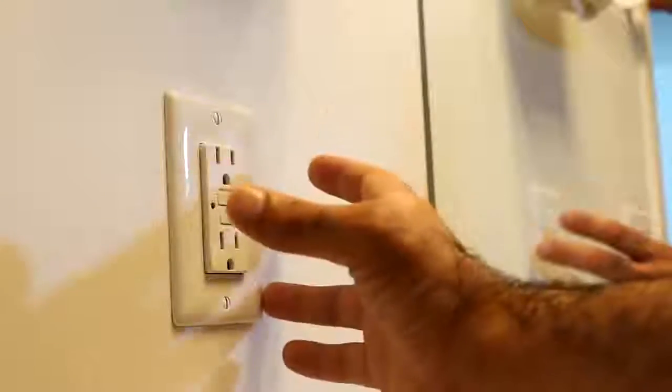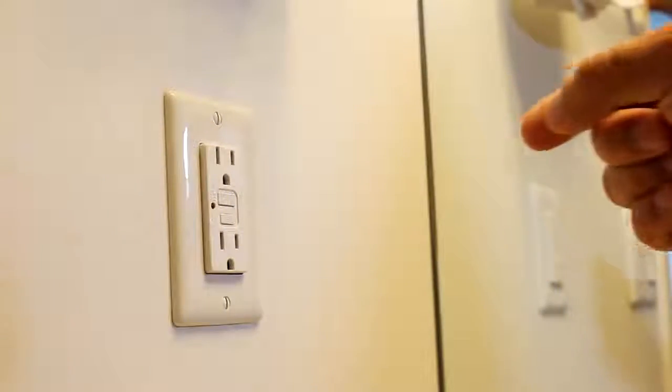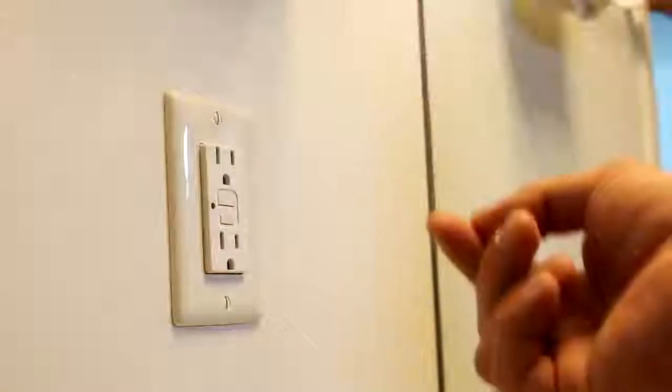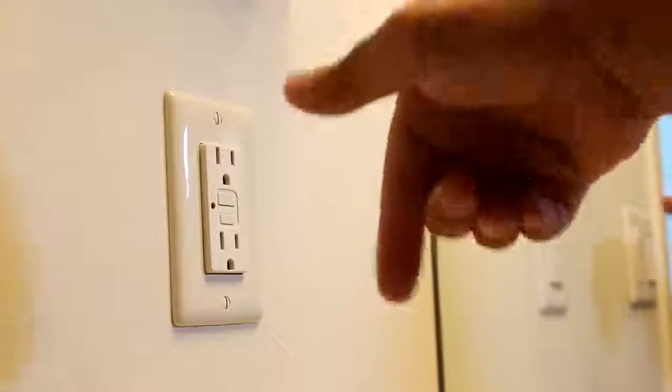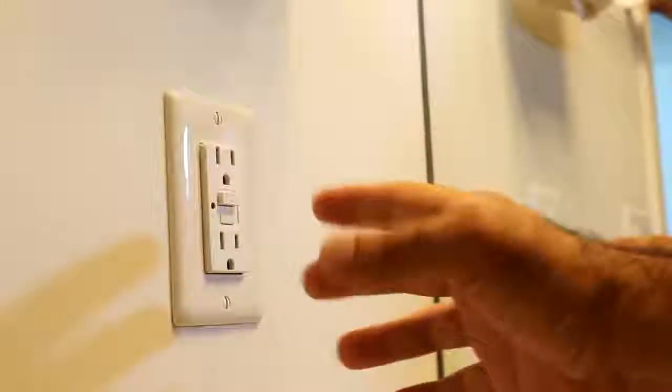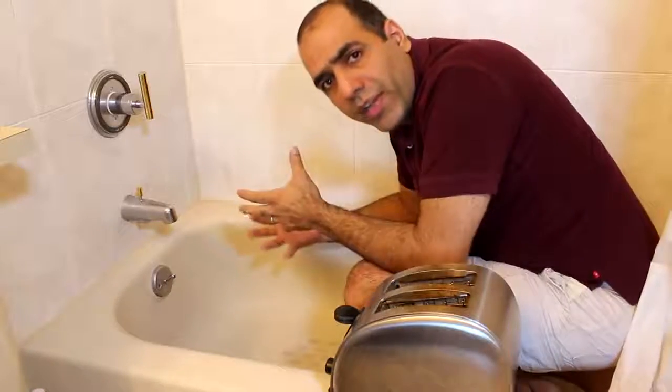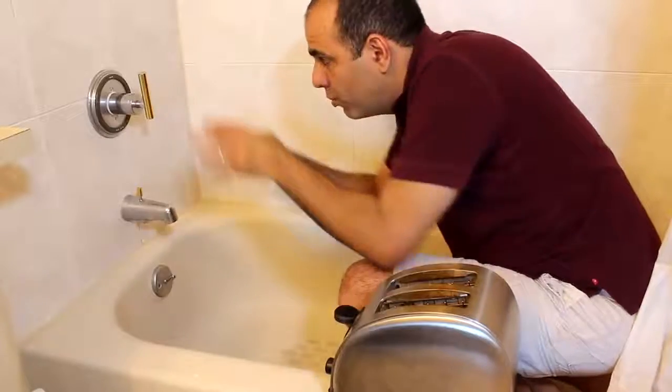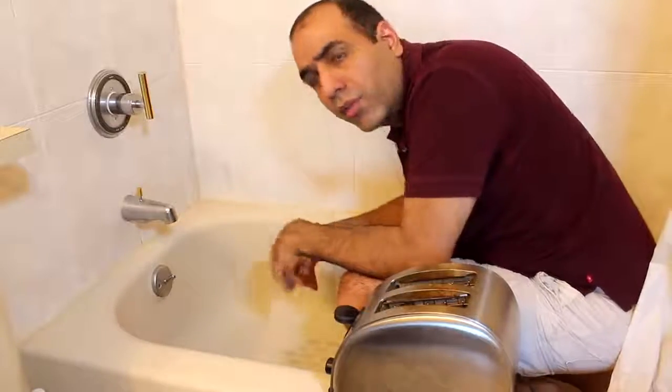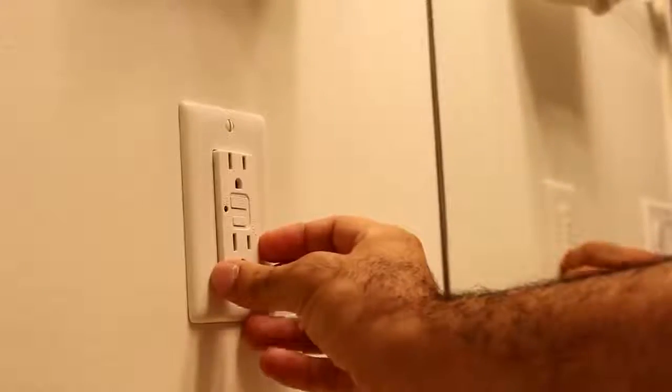What the GFCI outlet does is that it senses the current. Any current that comes out of the live wire must return to neutral to close the circuit. If it comes out of the live wire but doesn't return to neutral, it means that it's going to earth through an unwanted path. The outlet would open its breaker right away to avoid the unwanted current flow. Let's test it out.